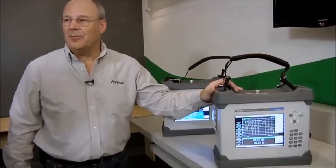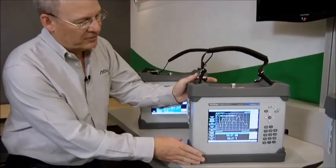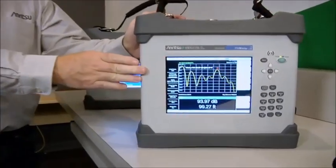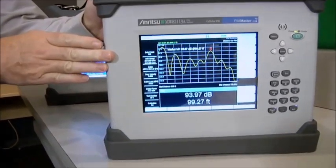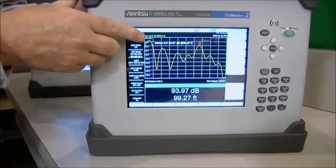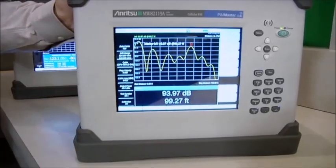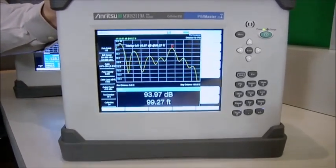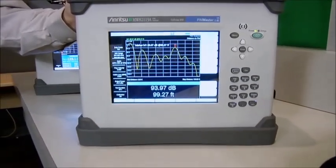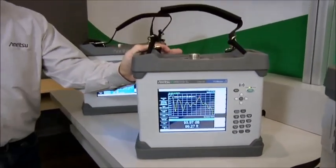So David, can you give us a demonstration of the new second generation PIM testers? More than happy to, Jeff. This is our 850 MHz cellular band instrument, and on here I have a display of a distance to PIM measurement, showing us where multiple PIM sources are. There's one at 10 feet and one at approximately 100 feet. So this is very useful in finding out where the PIM is located.